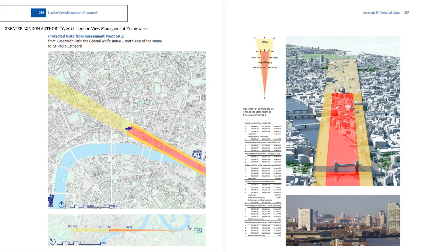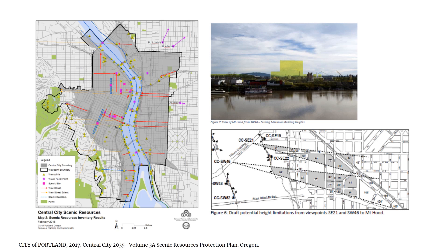Protection of view corridors to manage city form and transformation has been a common approach in many cities around the world. Review of view corridor intrusion approaches to visual assessment and protection — such as the London View Management Framework, Edinburgh Design Guidance, and Portland Scenic Resources Protection Plan — indicates a high degree of local specificity. None provided an appropriate off-the-shelf and objective method for defining building height thresholds to avoid view intrusion impacts.